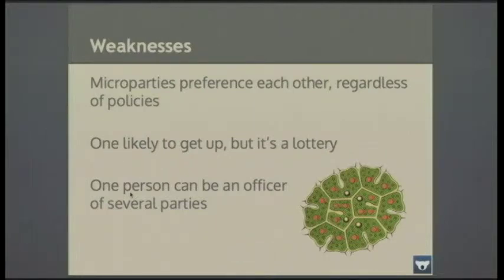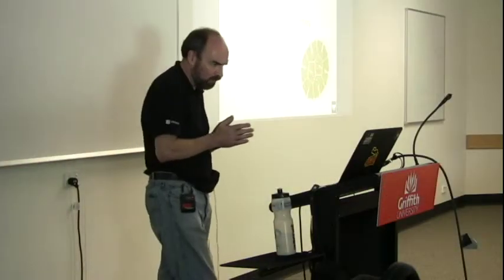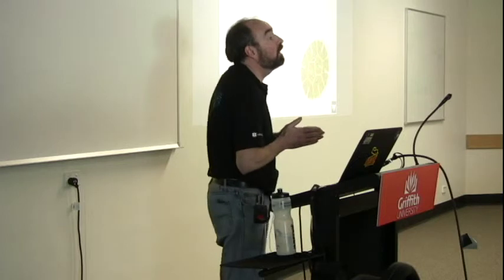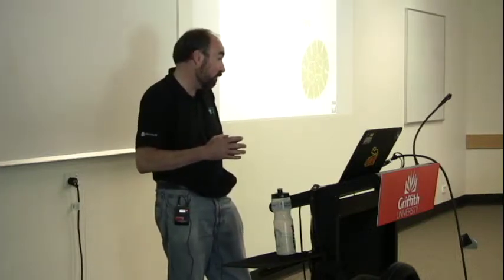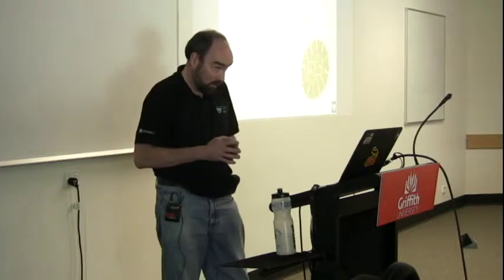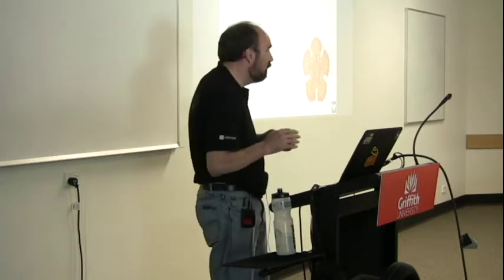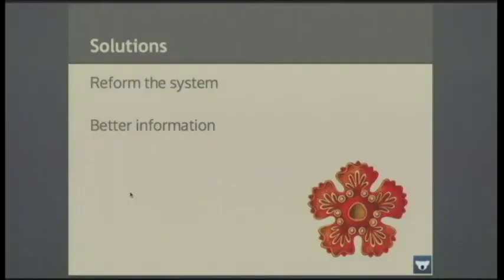What's been happening is microparties often preference each other regardless of policy — the theory being that one of them will eventually get up. So as we've seen, we get a lottery: parties starting with a very small number of votes ending up elected to the Senate. Another real problem is that one person can be an officer for more than one party — during our last election one person was submitting preference tickets for more than one political party, and we've seen the results of that. I'm not very pleased about that situation.